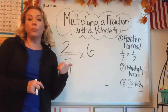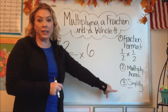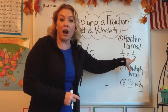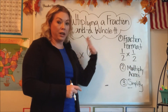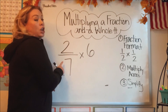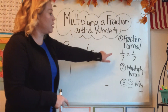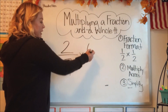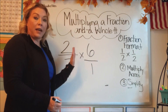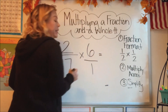Let's do another problem of multiplying a fraction by a whole number. The steps are: first, get it in fraction format — a fraction multiplied by a fraction; second, multiply straight across; and third, simplify. Here's the next problem: two sevenths multiplied by six. This is not in fraction format, so we need to get six into a fraction. Putting a one under the six doesn't take away from the value at all — it's still six — it just allows us to put it in fraction format.